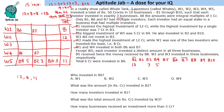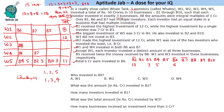For w1 investing 8 crores across three distinct amounts, possibilities are 1+2+5 or 1+3+4. Also given: b5 received twice the money received by b8; w1 invested in b5 and w3 invested in b8 respectively. Total 6 crores was invested in b6, and we also found that b2 and b10 each received 3 crores.